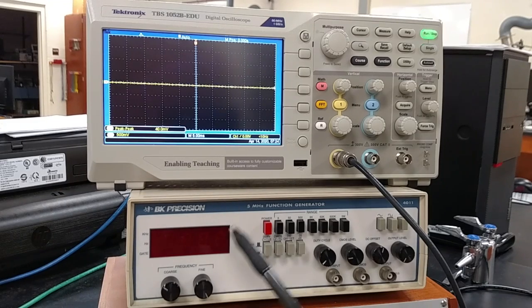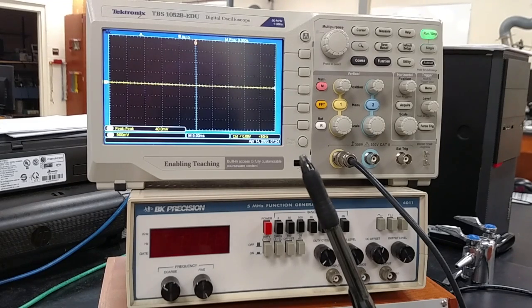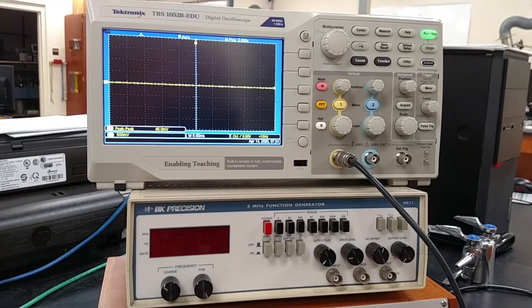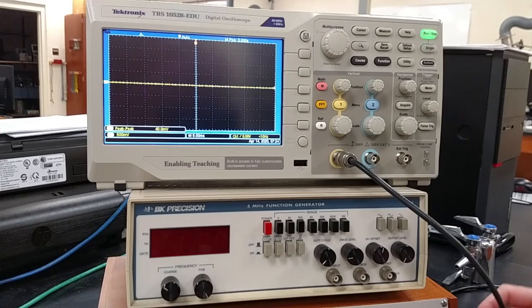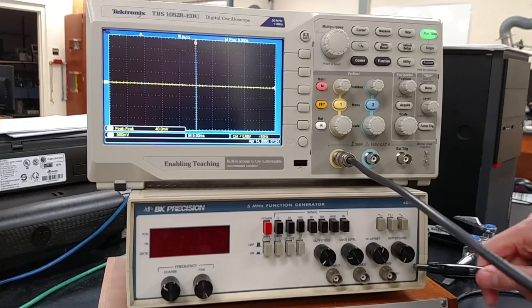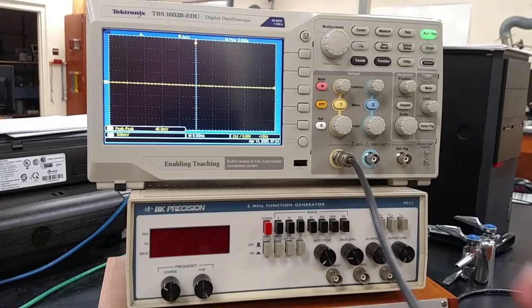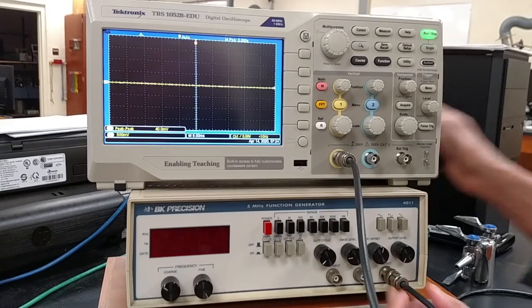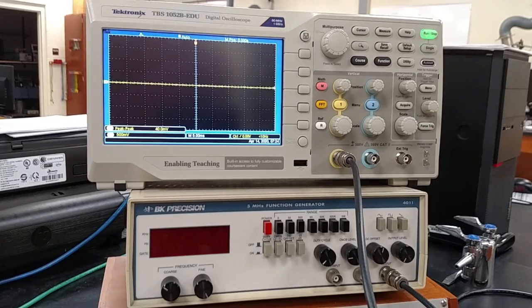In this video we are going to look at the properties of the function generator module that will provide the signal source for our experiment after passing through the electronics of the quantum analogs device. So we're going to look at the output coming from the function generator in channel 1 of the oscilloscope.